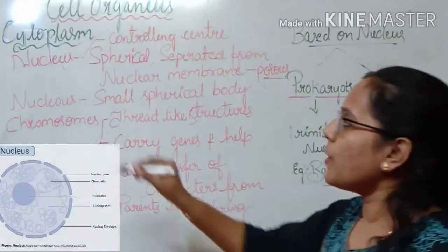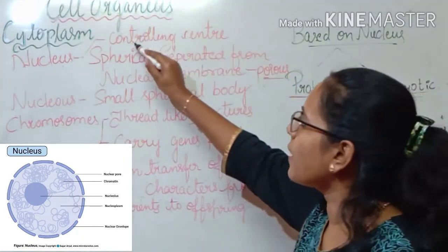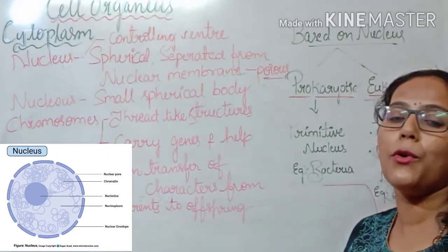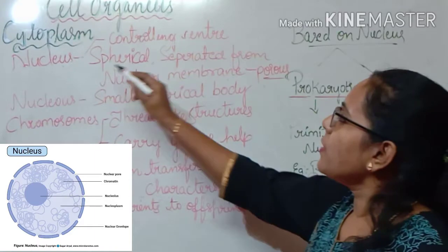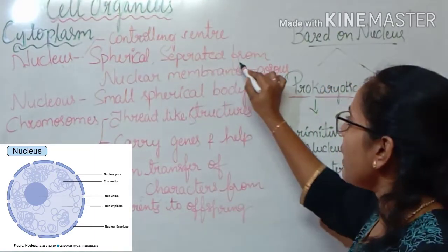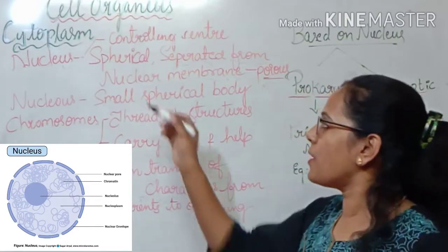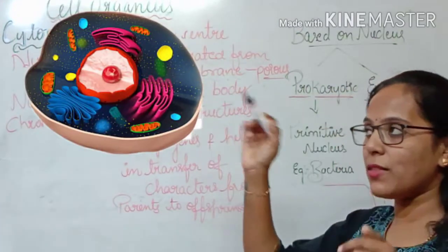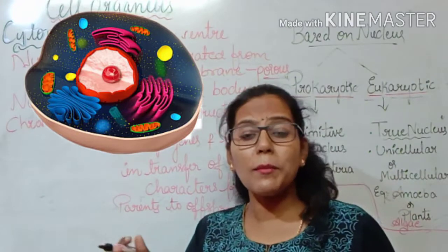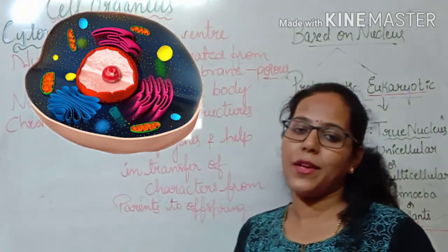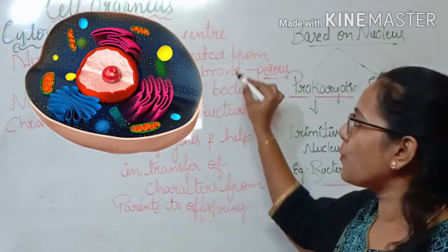Let us understand the nucleus. The main function of the nucleus is it controls the cell — it is called the controlling center of the cell because it has the capacity to control the various activities performed by the cell. The nucleus is spherical in shape and is separated from the cytoplasm by the nuclear membrane. This nuclear membrane is porous, meaning it has small holes on its surface, which allow certain materials to enter the nucleus.